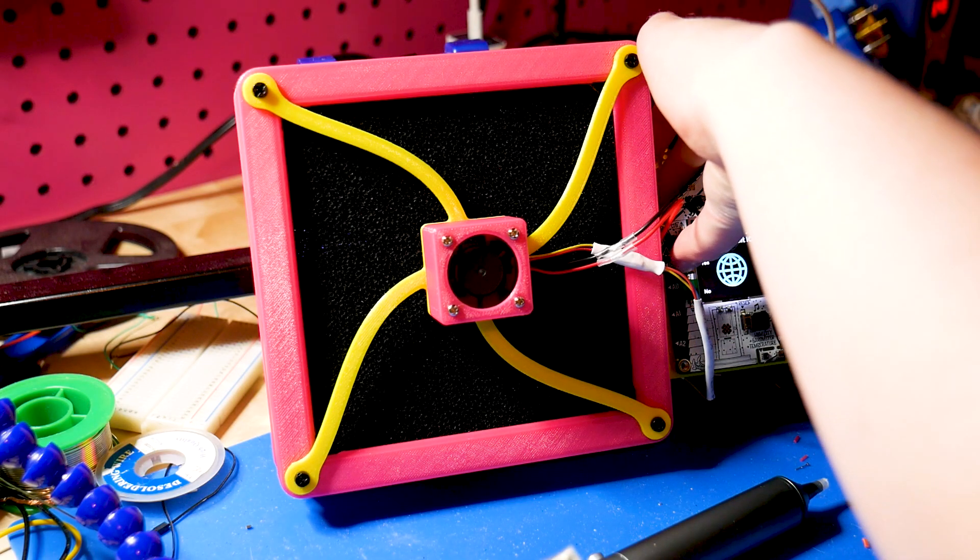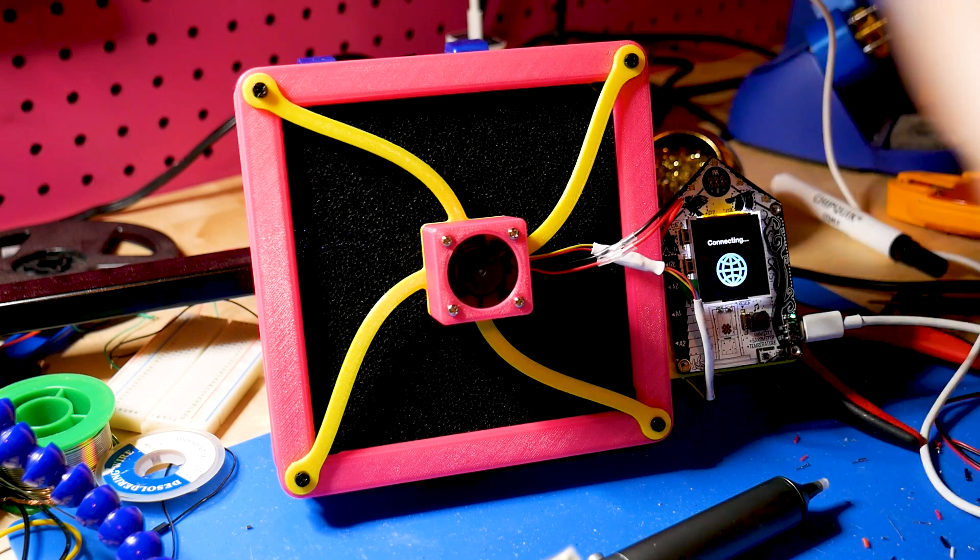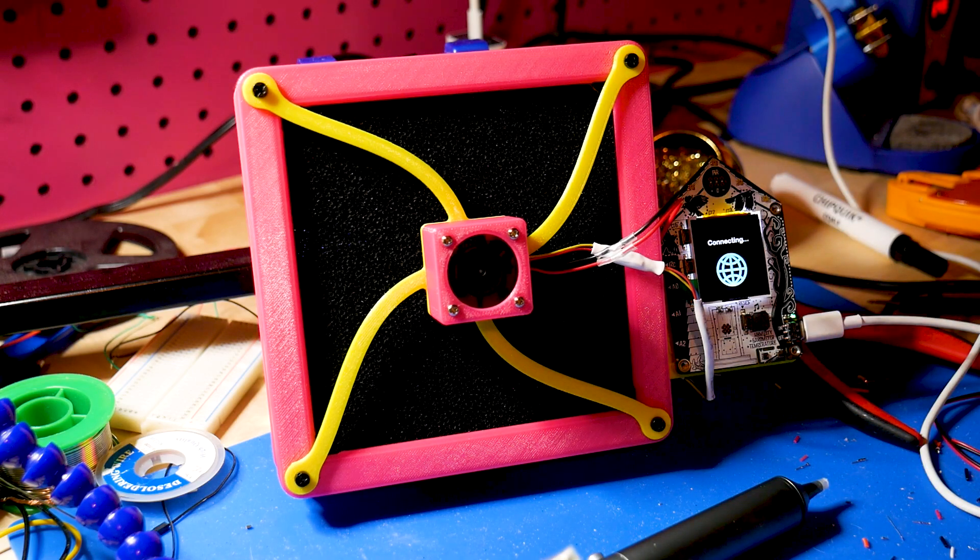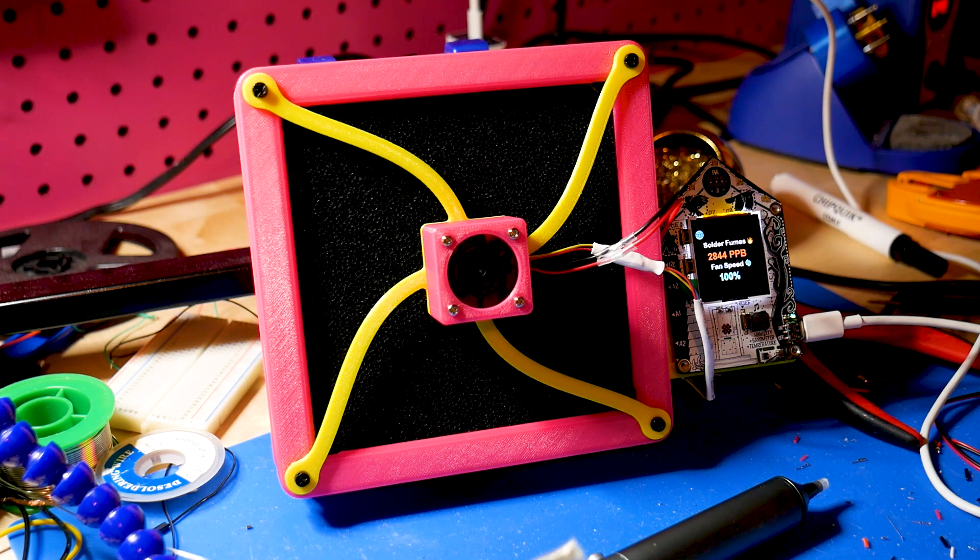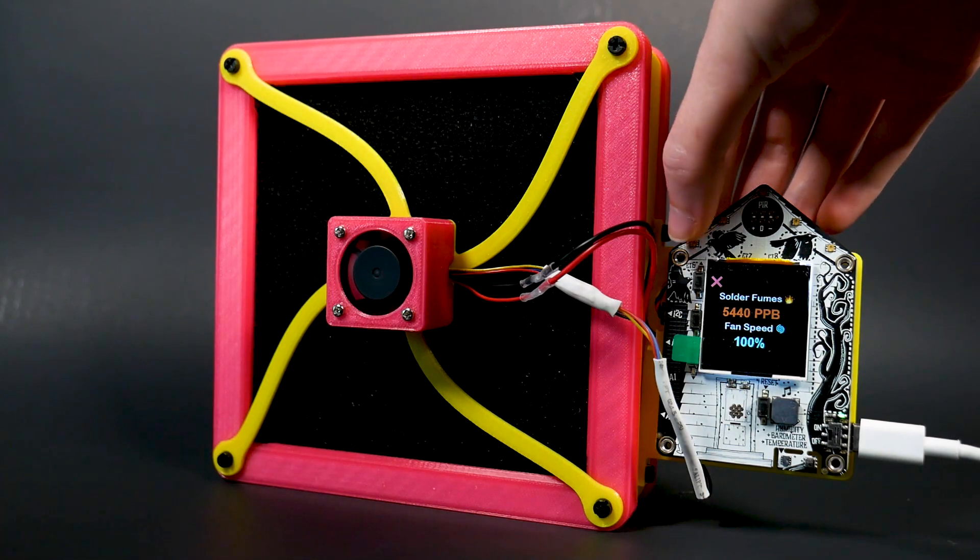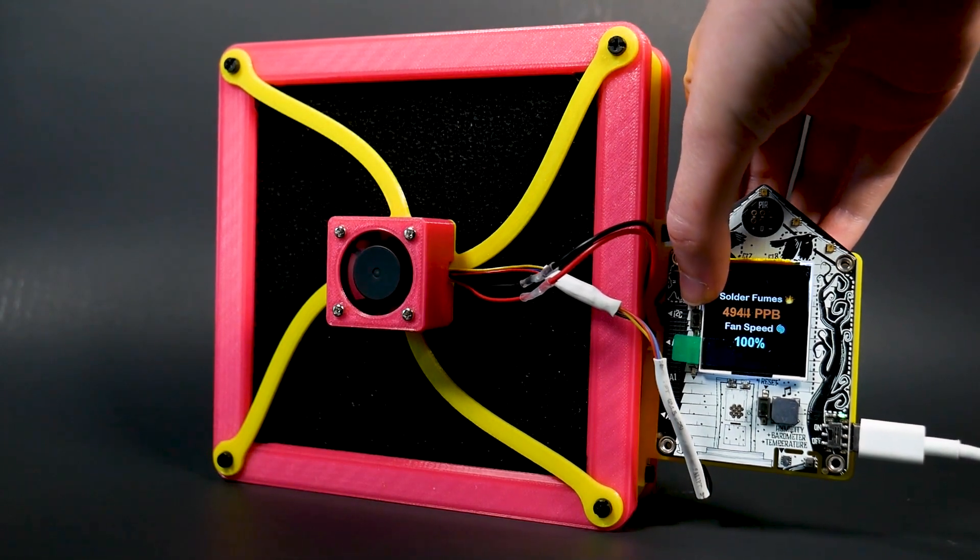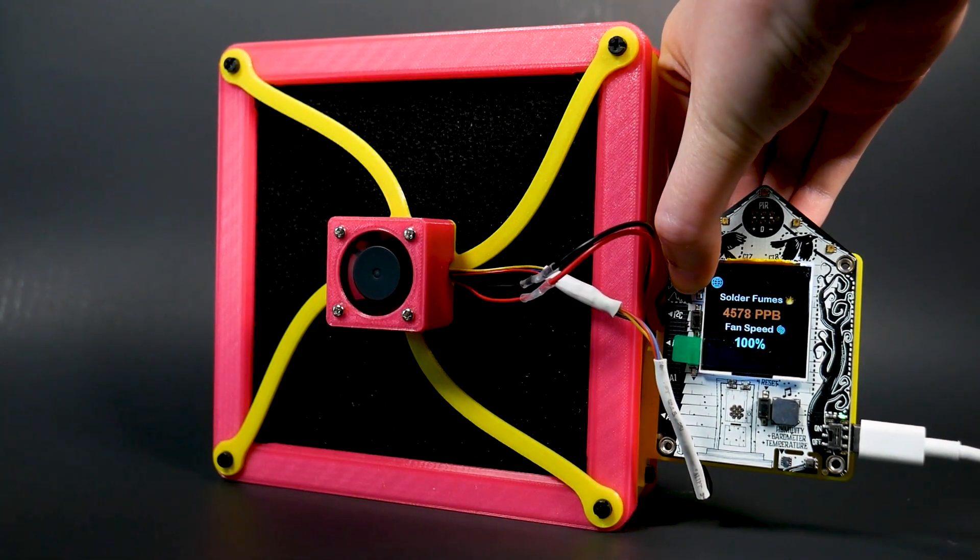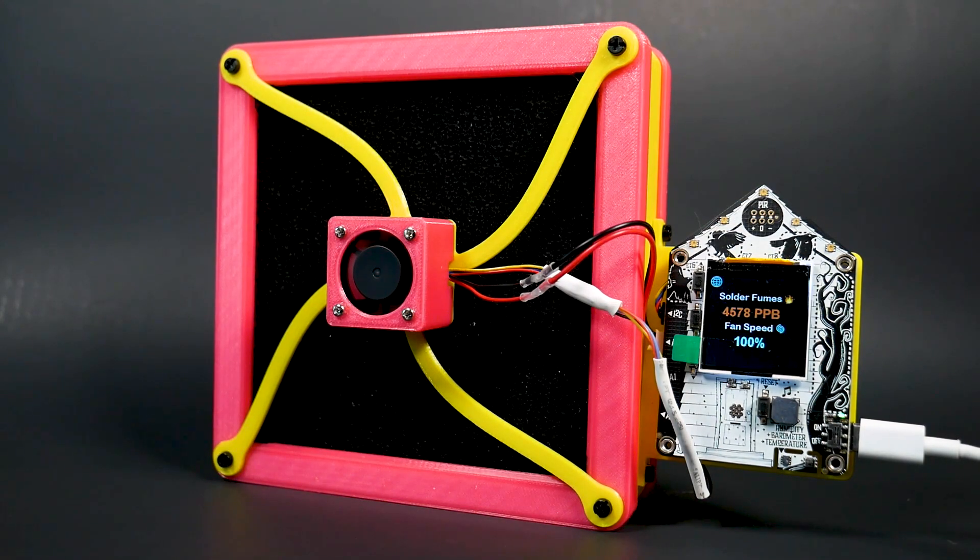The fan has a startup menu where you choose whether to send your fumes to the cloud or stay off the grid. Either way, the screen will show you the air quality and the fan's RPM, which adjusts based on the fume levels. You can also change your internet connected status by pressing the top button so you can either connect or disconnect any time while the fan is going. If I'm going to use an IoT device, I'm going to need options.